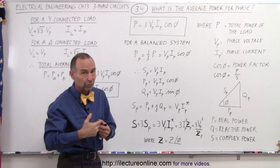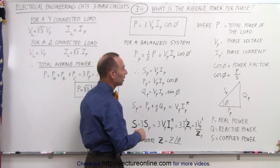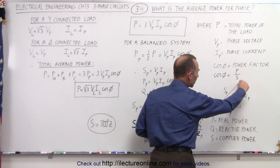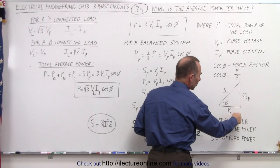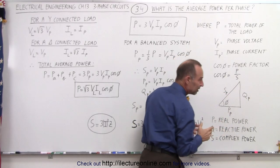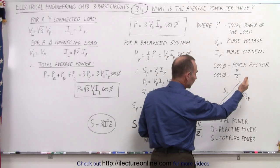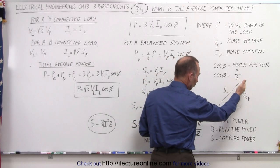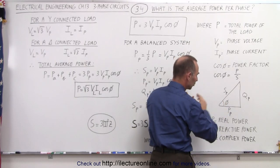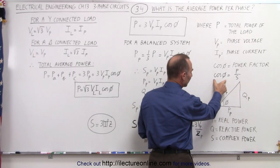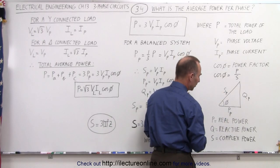Notice that the power factor goes to one as the phase angle goes to zero. If we draw the triangle, where we have the complex power, the reactive power, and the real power, the sub-P simply means for a single phase. It would be the same if we took the total reactive power, the total complex power, and the total real power — we have the same relationship. So the power factor can be defined as the real power divided by the complex power.